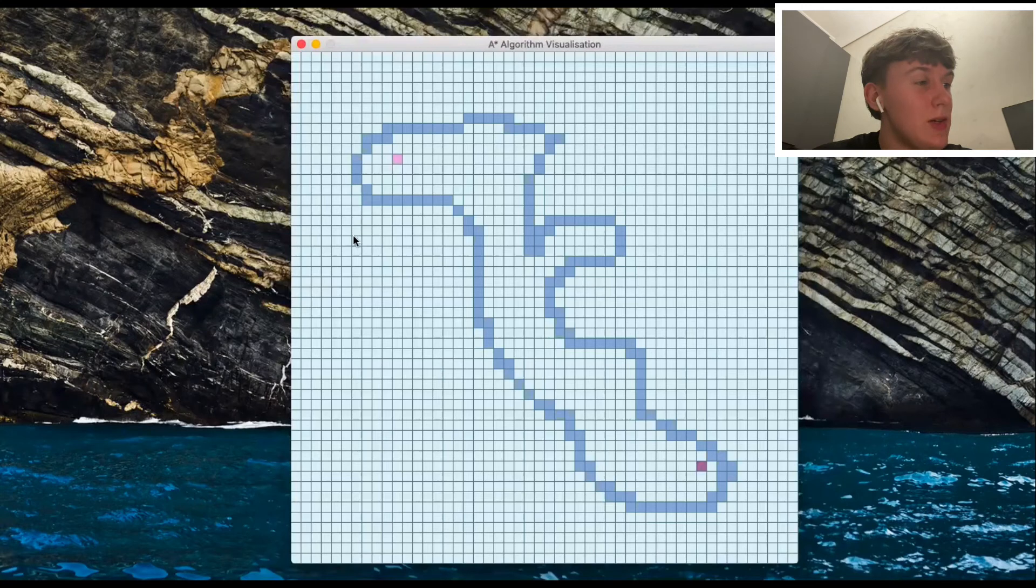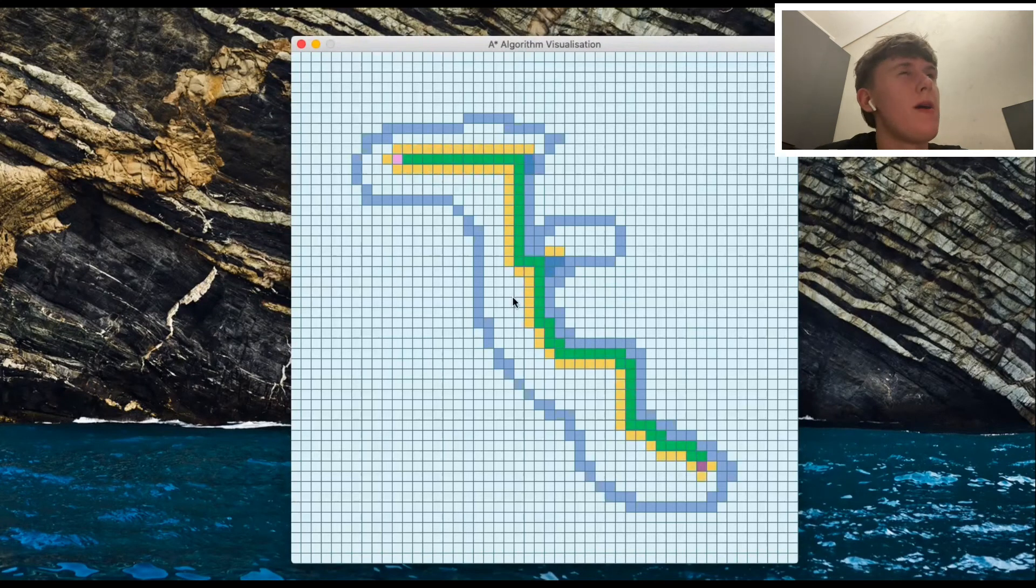I've now pressed enter and the algorithm has found the shortest path without going diagonal. It could be a shorter path obviously if you went diagonal, but that's why I coded it so you didn't have to go diagonal.